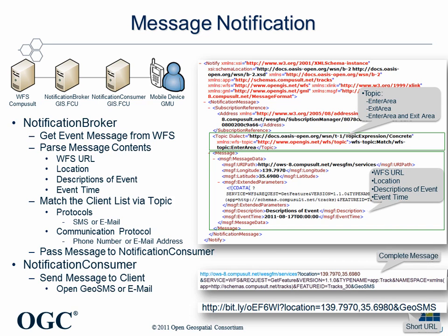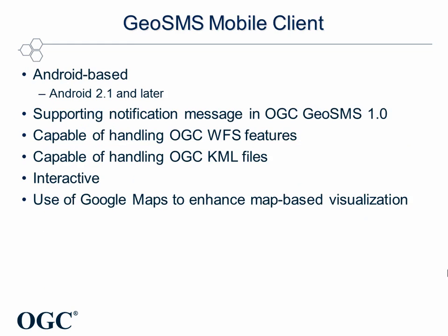Here's an example of how the broker converts the original WFS notification to the OGC GML SMS format. The mobile client is an Android-based application which supports OGC GML SMS 1.0 standard and is capable of handling WFS features and KML files. Once the mobile client receives the GML SMS, the application uses Google Maps to enhance map-based visualization.